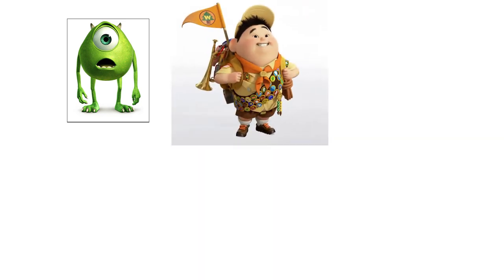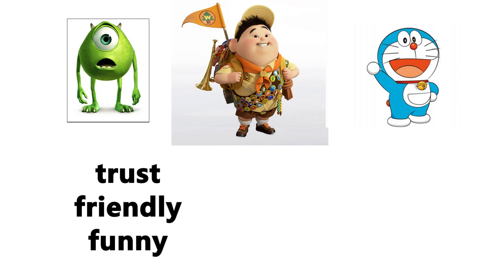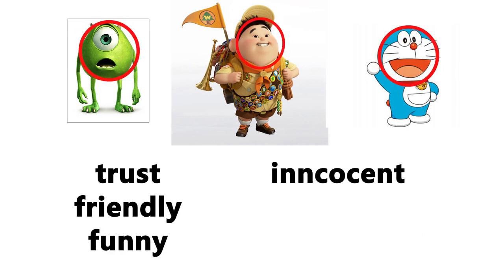First we will take the circle. Look at these characters: Mike Wazowski from Monsters Inc., Russell from Up, Doraemon, and Ralph. Look at all of these characters' personalities — trust, friendly, fun, innocent. When we use rounded forms in a character, that character is going to be more funny. So always try to use rounder shapes in your funny characters.